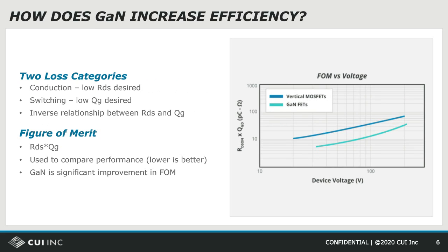So how does GaN improve efficiency? Efficiency is a key feature of a power supply, and one that GaN significantly improves by reducing the losses of the power switch. Losses in the power switch are generally separated into two categories: switching and conduction. One difficulty in improving efficiency is that these two loss mechanisms are inversely related — improving one will negatively affect the other. A figure of merit is therefore used to compare the relative performance of devices. The figure of merit is the product of gate charge and on-resistance of the FET, and a lower value is considered better. GaN offers a significant improvement in the figure of merit over silicon MOSFETs, meaning that it should be more efficient in a power supply application.